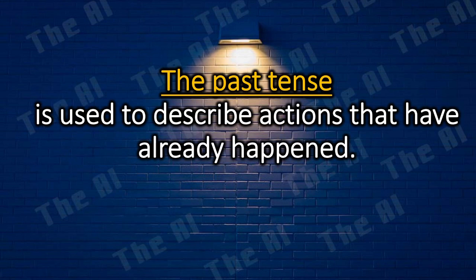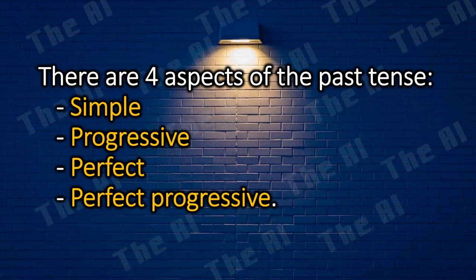The past tense is used to describe actions that have already happened. There are four aspects of the past tense: simple, progressive, perfect, and perfect progressive.